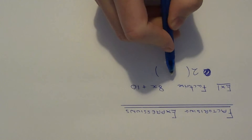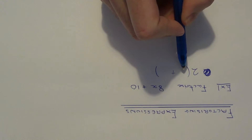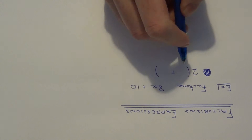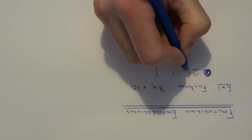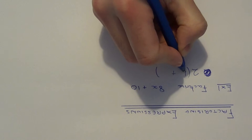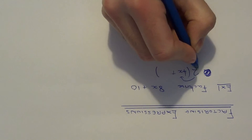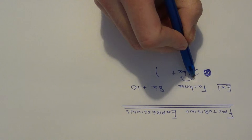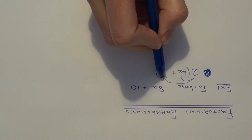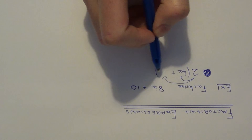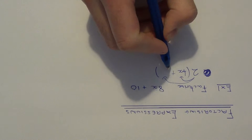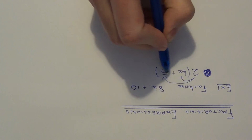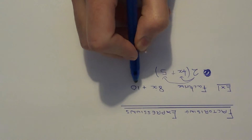So next let's figure out what goes inside the bracket. 2 multiplied by something is 8x — this will be 4x, because 2 times 4x is 8x. Also, 2 multiplied by something must give 10 — this will be 5, because 2 times 5 is 10.